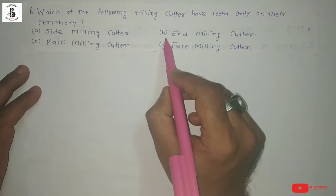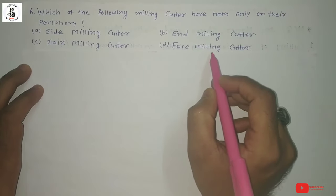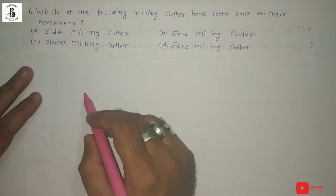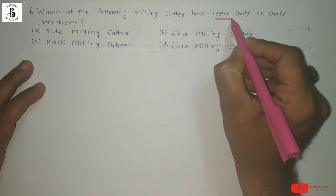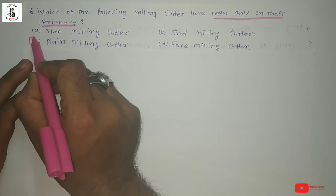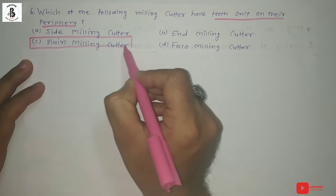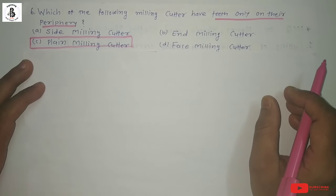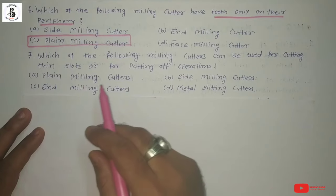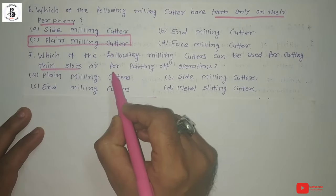Next: Which of the following milling cutters have teeth only on their periphery? Option A: side milling cutter, option B: end milling cutter, option C: plain milling cutter, option D: face milling cutter. The plain milling cutter has teeth only on its periphery and is used for making flat surfaces. So the right answer is option C: plain milling cutter.